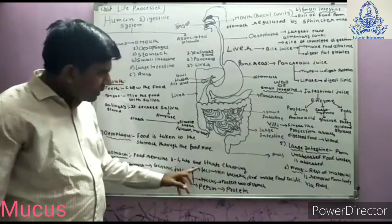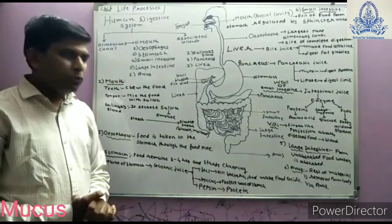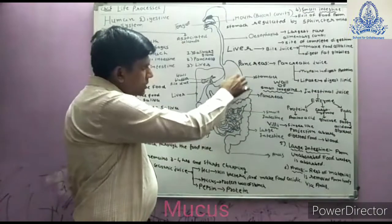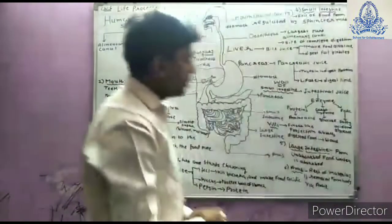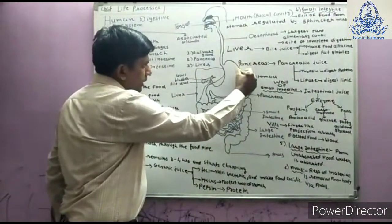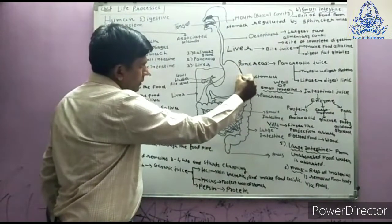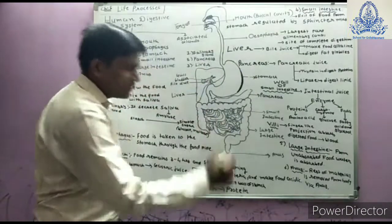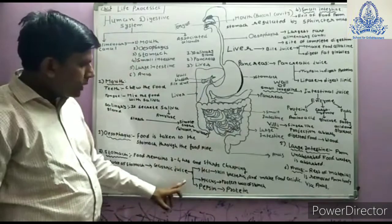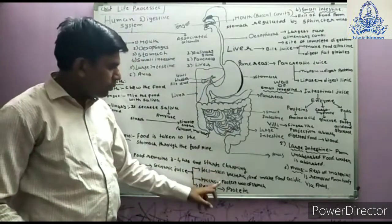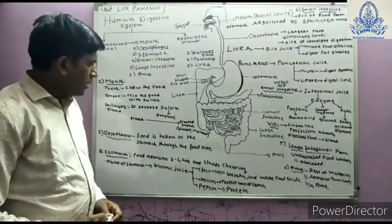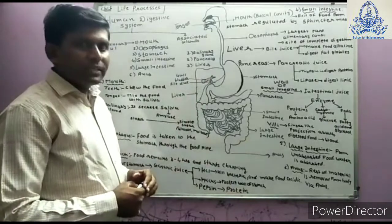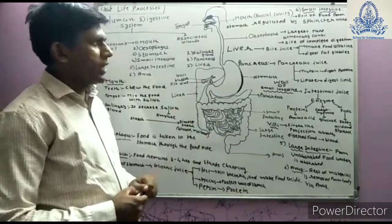Mucus makes a protective layer along the wall of the stomach. This protective layer prevents damage to the wall of the stomach from HCl. So mucus creates a protective layer for the stomach wall.